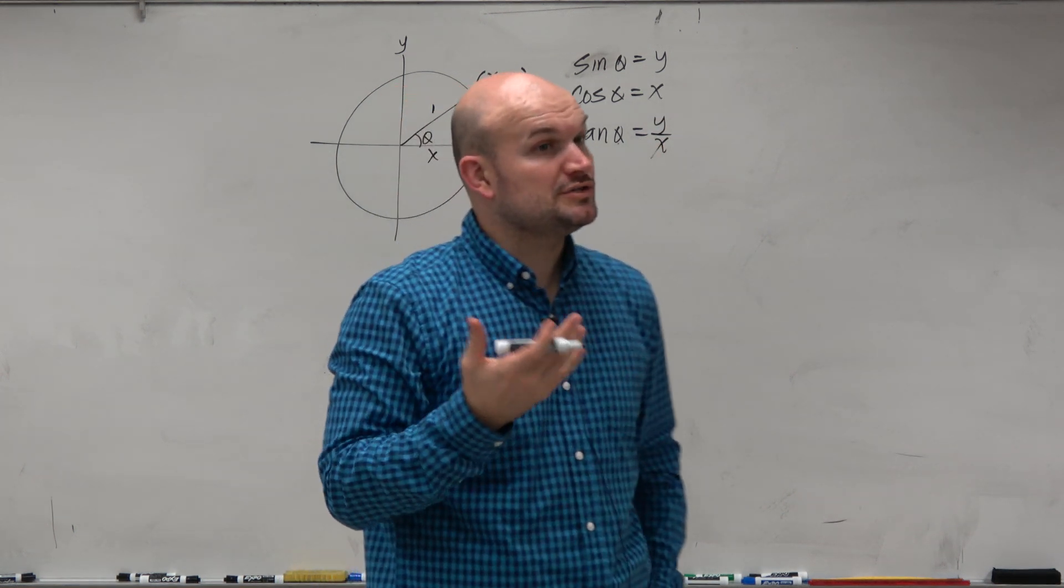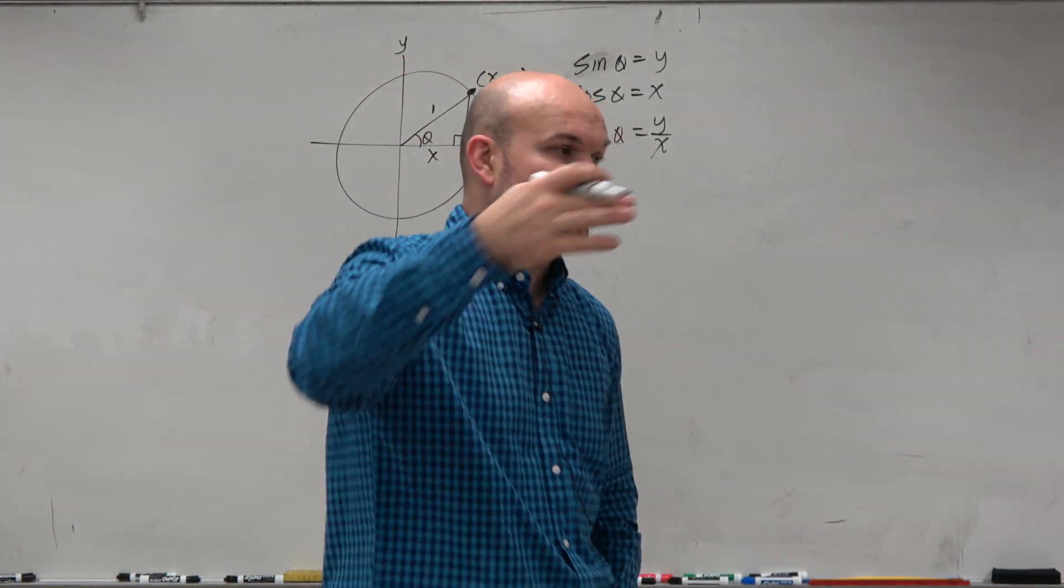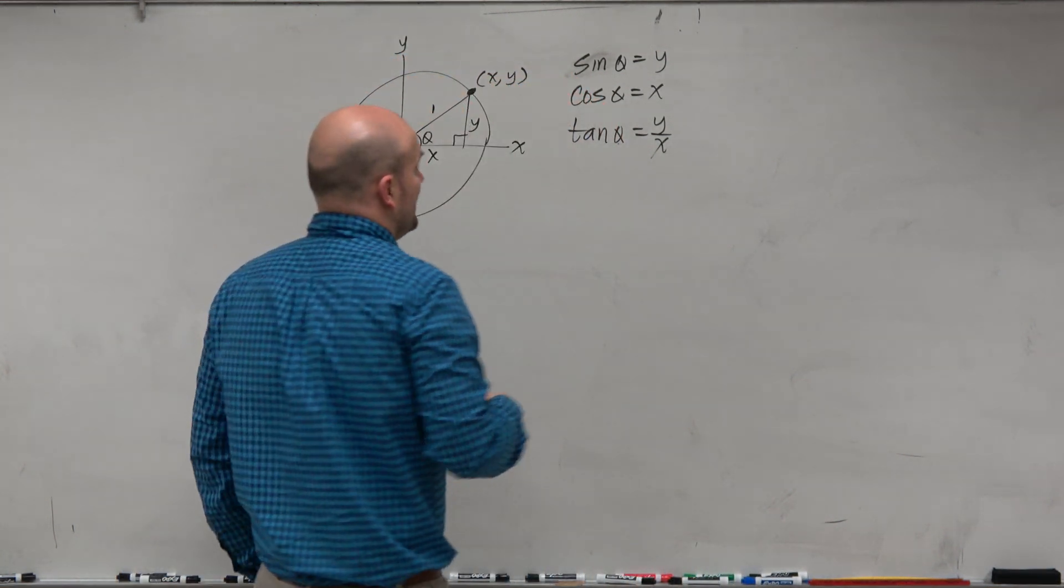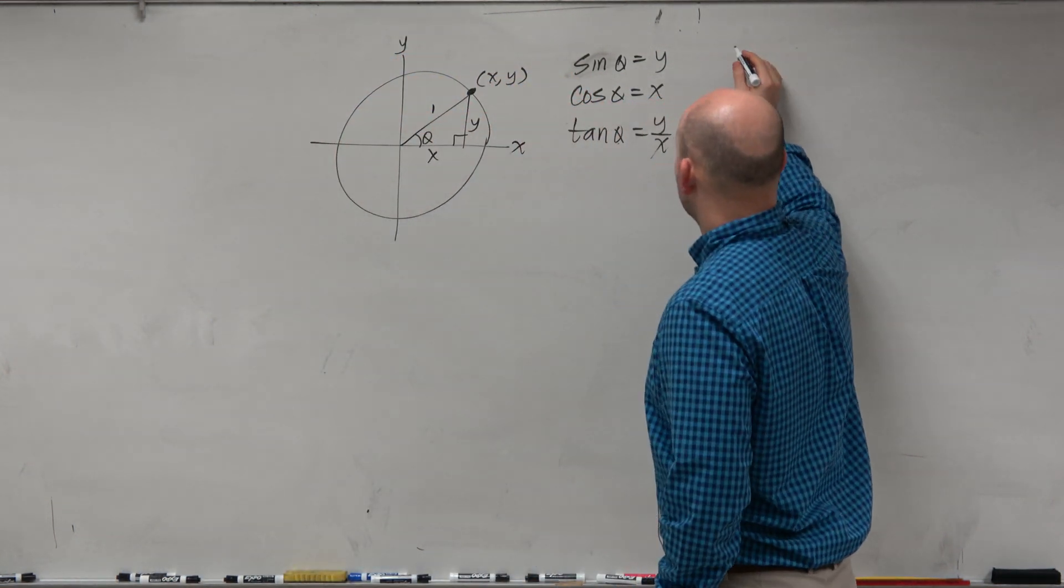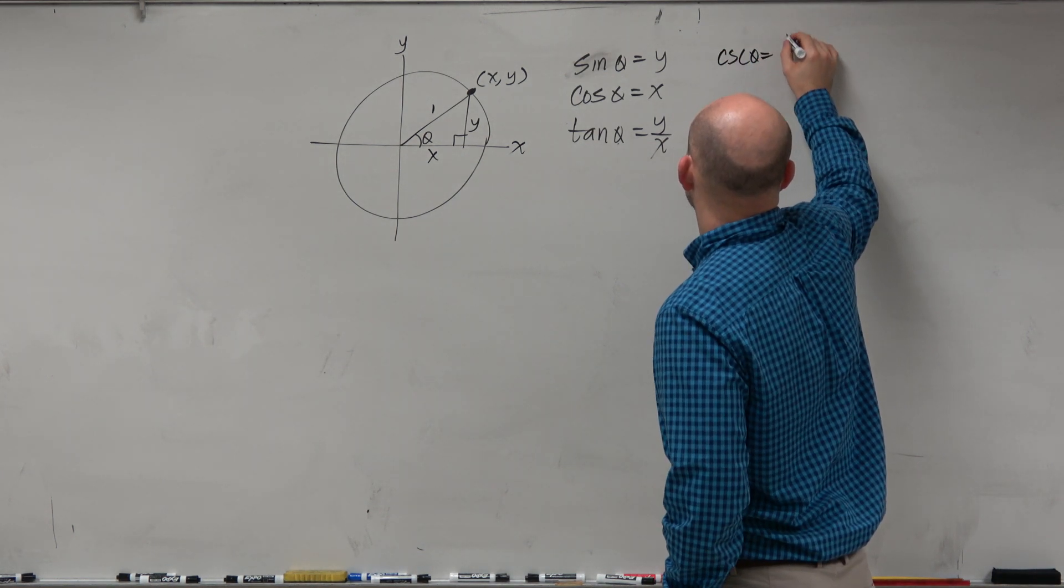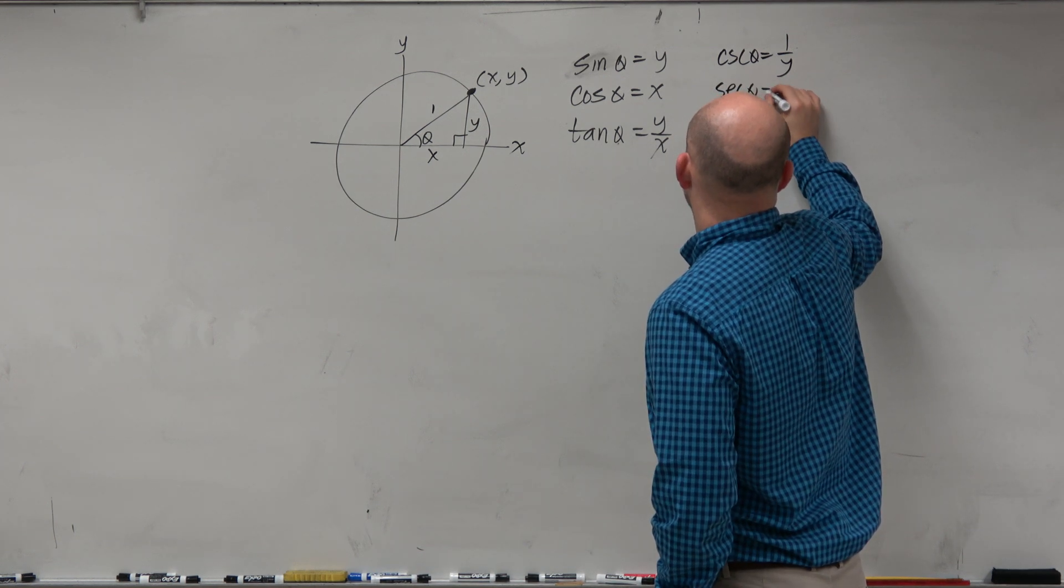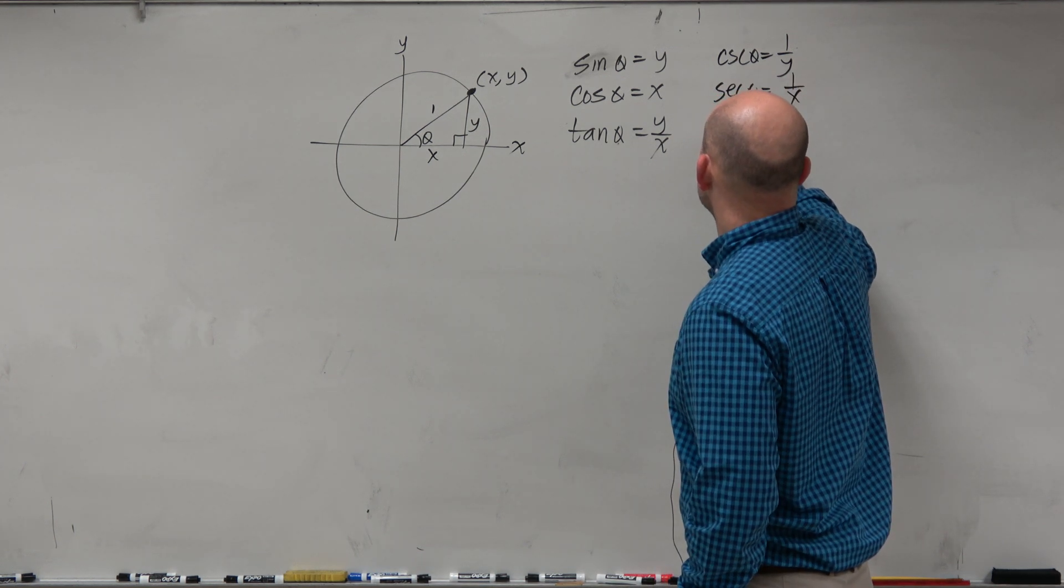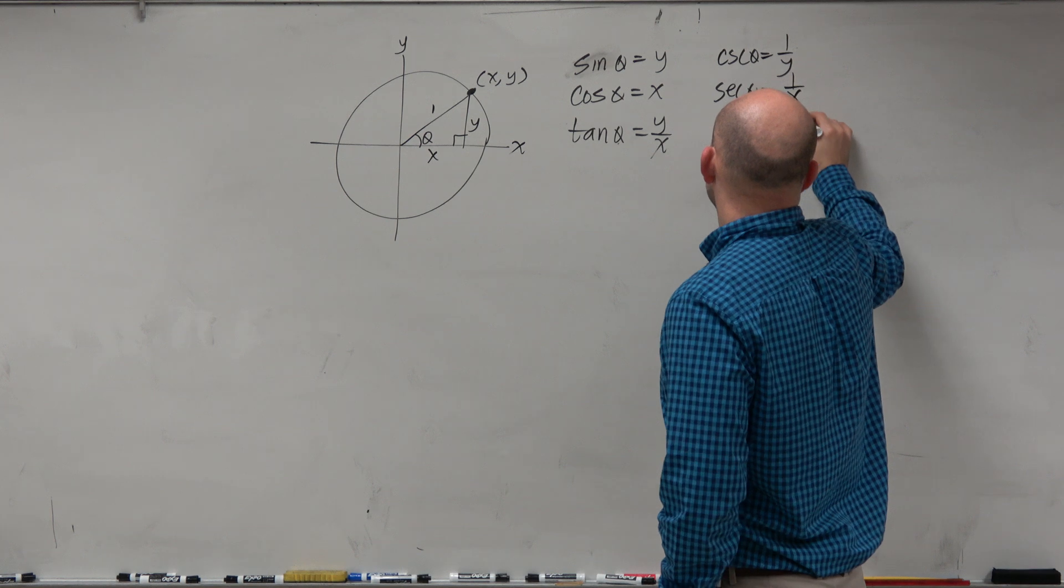Then we also introduced our reciprocal functions, right? Hypotenuse over opposite, hypotenuse over adjacent, and opposite over adjacent. So therefore, adjacent over opposite. So that would have been cosecant of theta is 1 over y, secant of theta is 1 over x, and cotangent of theta is x over y.